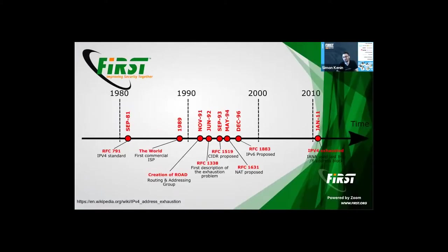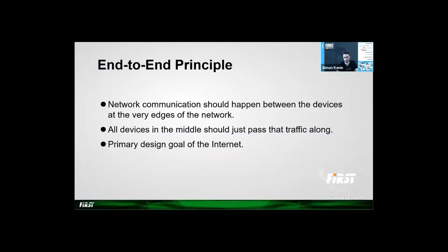In this talk, we are going way back to the 80s, when IPv4 became a standard. We slowly progressed until today to see what happened and where we went wrong. The internet was built on the end-to-end principle, which is simple: data between two devices should be sent as is, without any manipulation on the way.